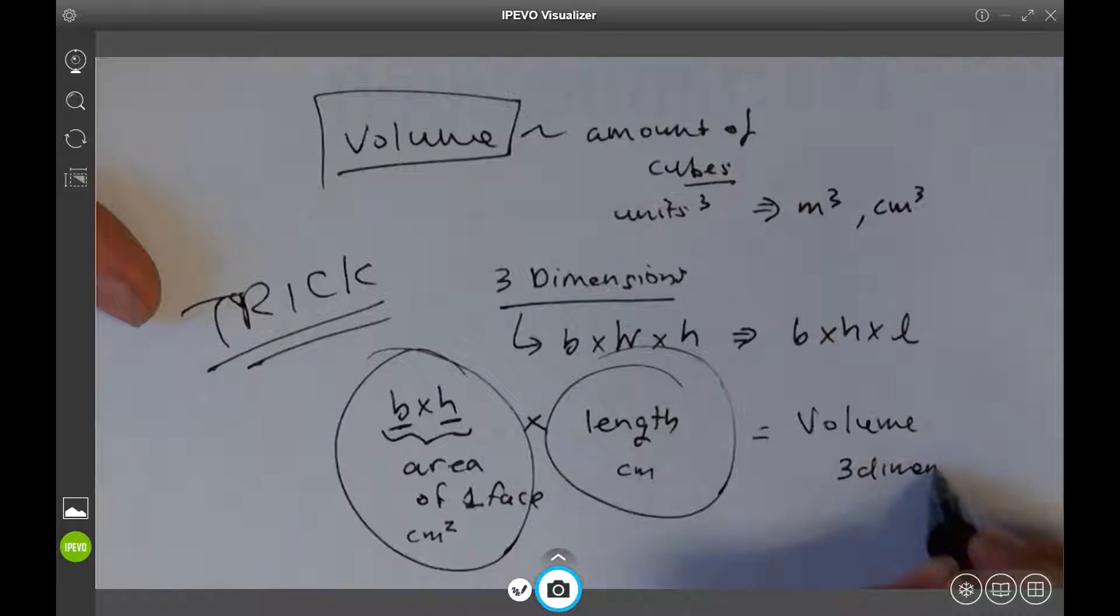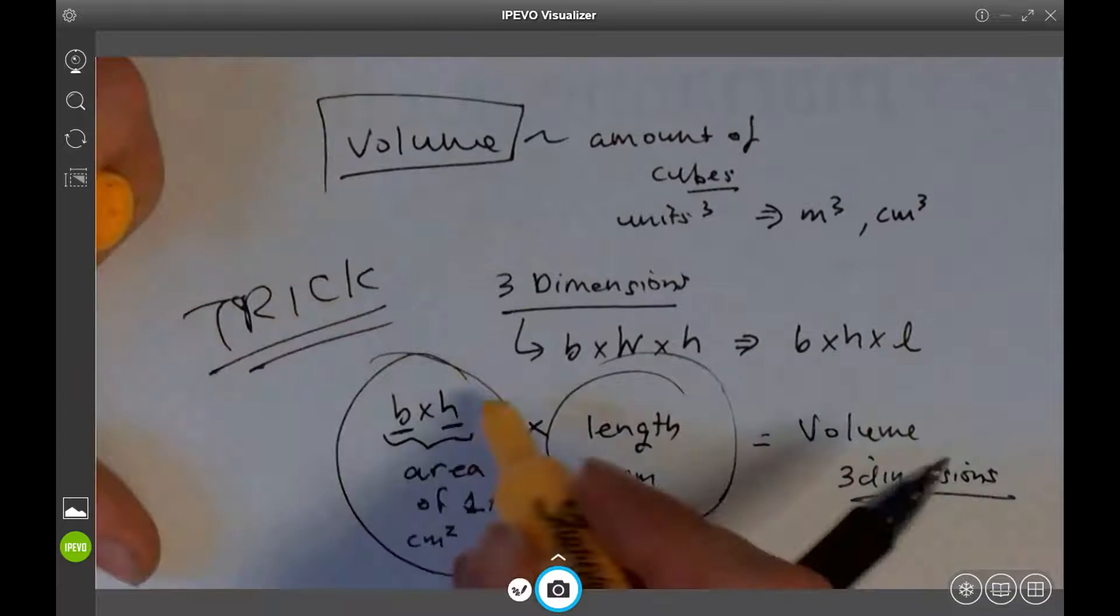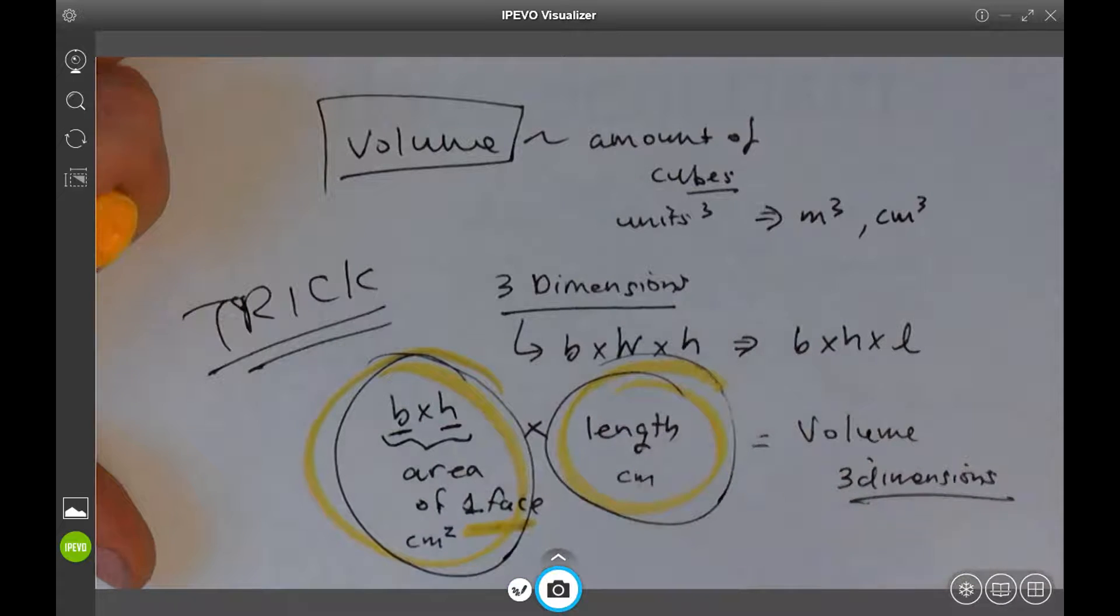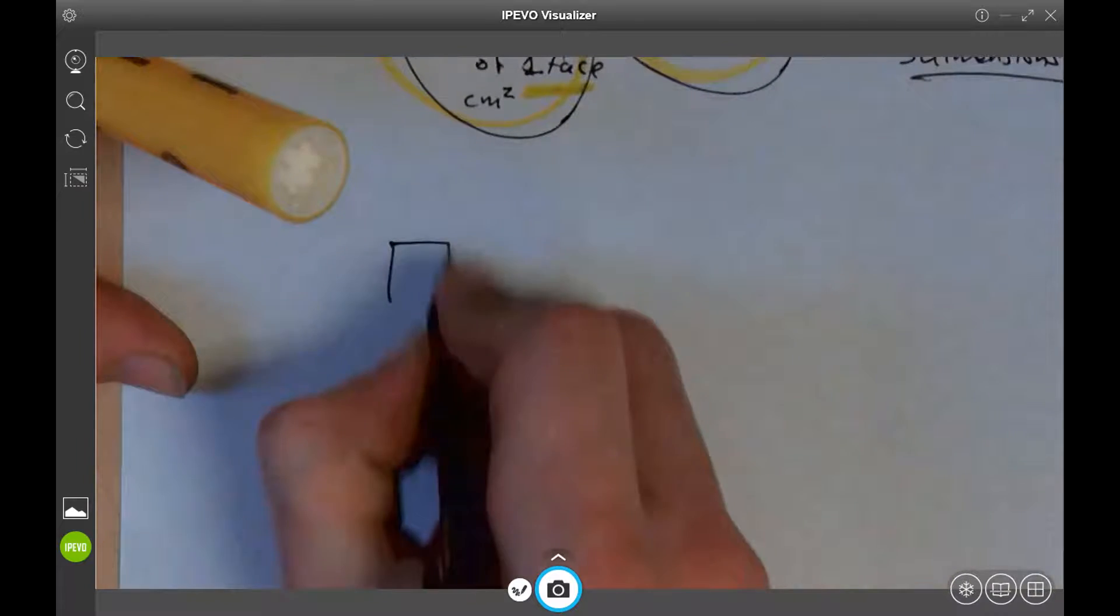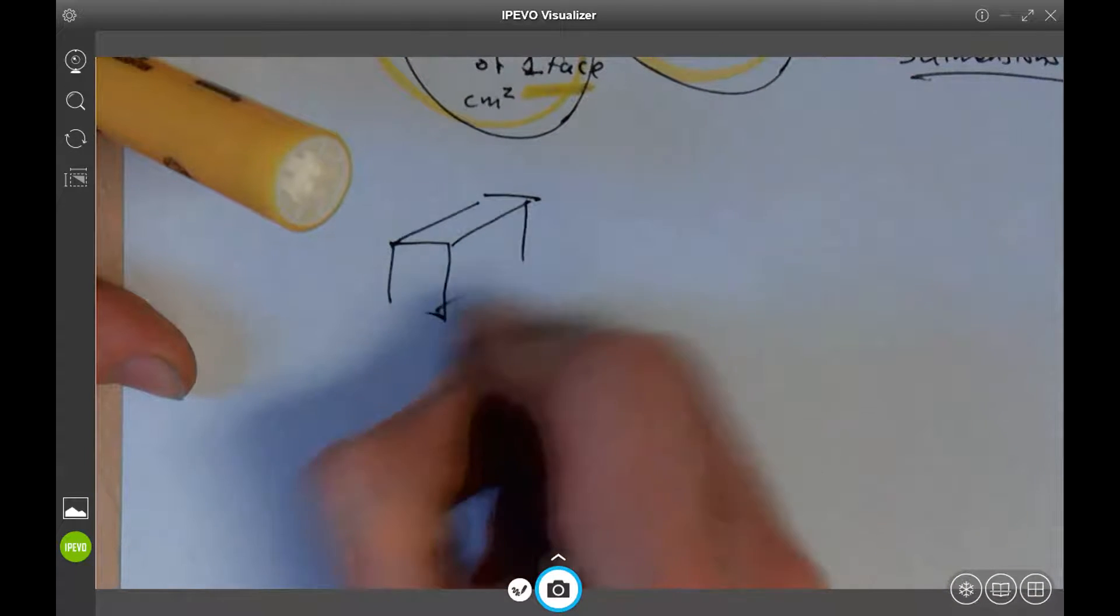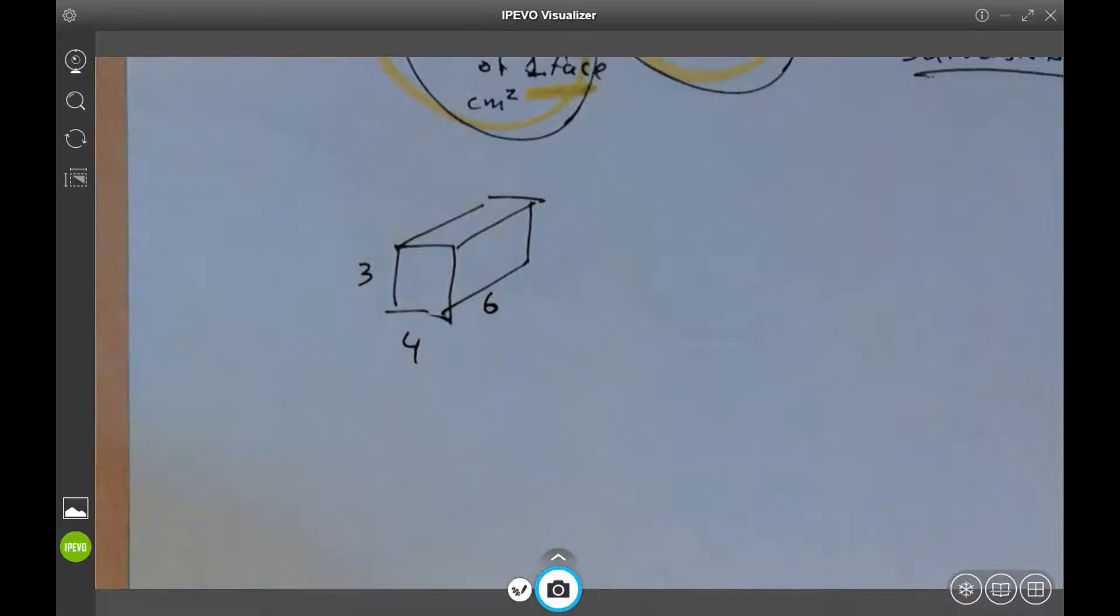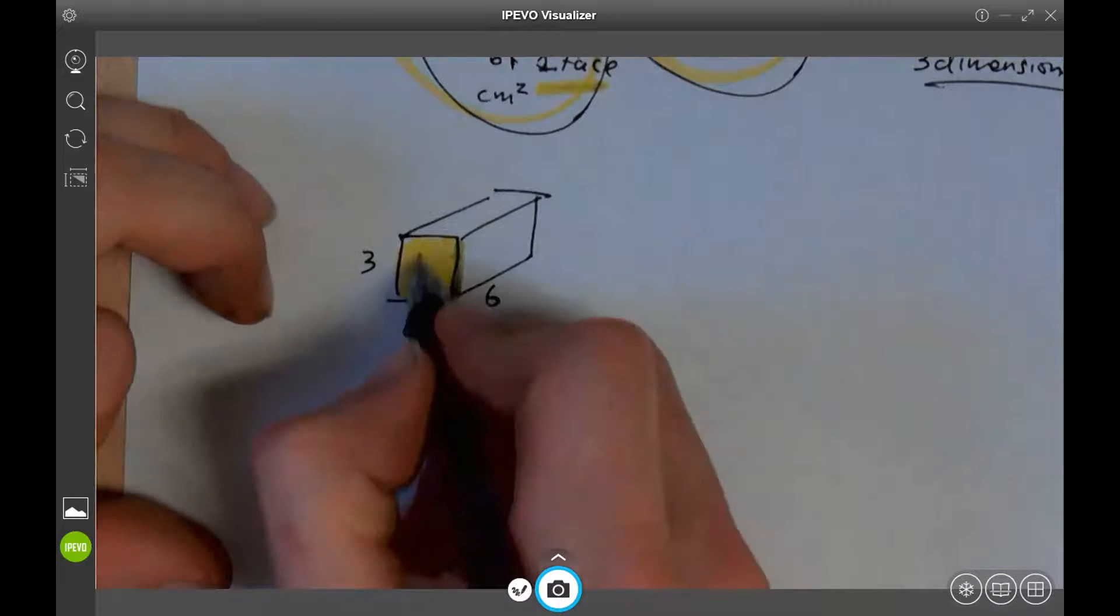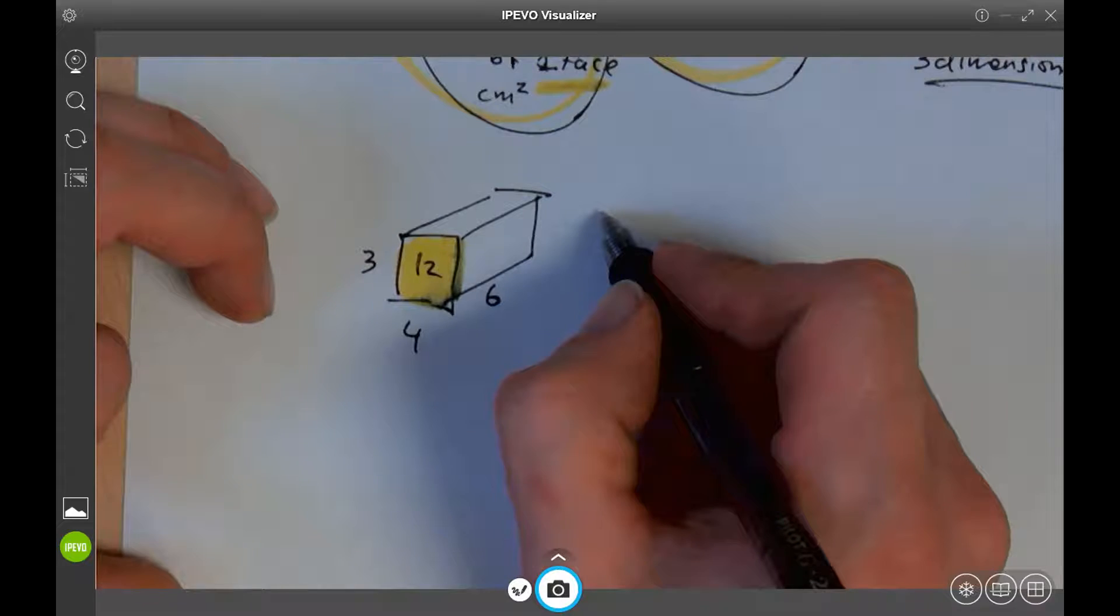Now, this doesn't really make sense what I'm doing until we go through some examples. So why is this a trick? To remember it like this: area of a face times by its length. Here is the trick. So if I'm going to do a question with a rectangular prism, it's easy. If this was 3, this was 4, this was 6 - area of a face, that's my face. 3 times 4 is 12. 12 times 6 is, what is 12 times 6? 60?